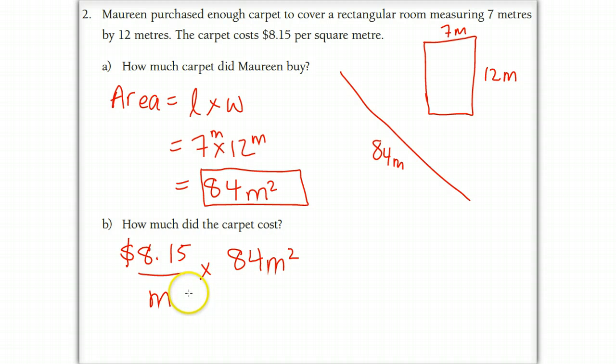Oops and this should be a square down here too. We know we've set it up right because the meters here, we've got meters on top and on bottom so they cancel out leaving us just with dollars.